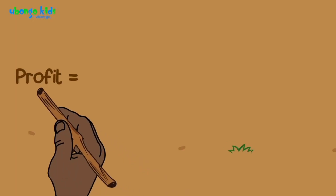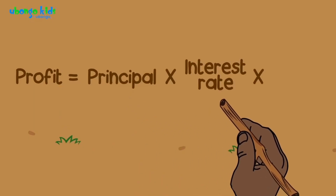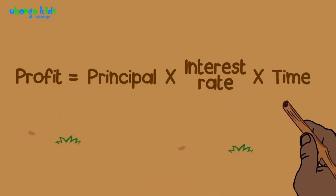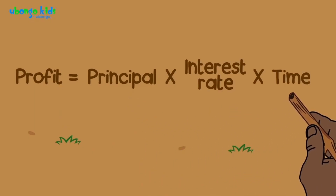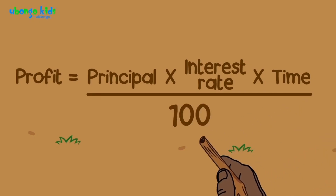To calculate for profit, you must multiply your principal — which is the amount of money you're putting in the bank — by the interest rate, then by the time you're investing your money for. Time can be the number of days, weeks, months, or years. Once you multiply all three, you divide it by 100, and the answer is the profit you will make.